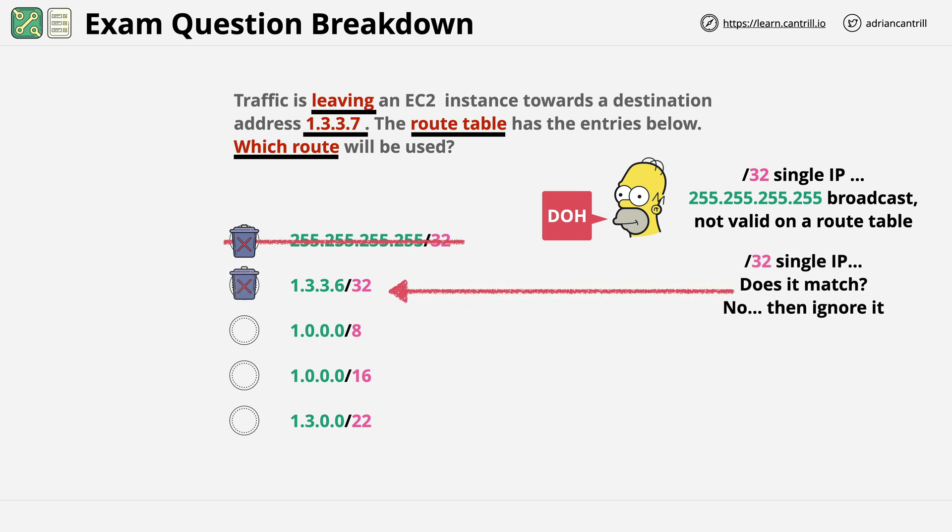Now we're at the interesting part of the question. Because with the last three answers, nothing is immediately invalid or obviously wrong. And so we just need to check if they match. And if they do match, how specific they are. Well, the third answer, 1.0.0.0/8, is a /8 prefix. And so it does match our IP. A /8 means that as long as the first octet matches, which is a 1, then the second, third, and fourth octets don't matter. 1.0.0.0/8 matches everything from 1.0.0.0 through to 1.255.255.255. And this includes 1.3.3.7, which is our IP address.